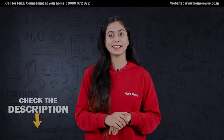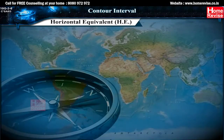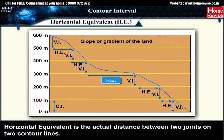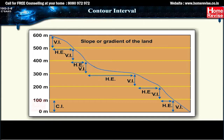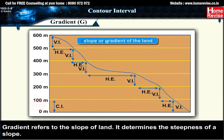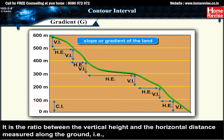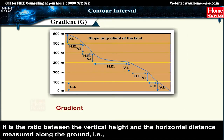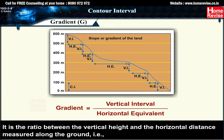Horizontal equivalent (HE) is the actual distance between two points on two contour lines. Gradient (G) refers to the slope of land — it determines the steepness of a slope. It is the ratio between the vertical height and the horizontal distance measured along the ground: Gradient = Vertical Interval ÷ Horizontal Equivalent.